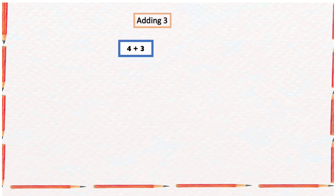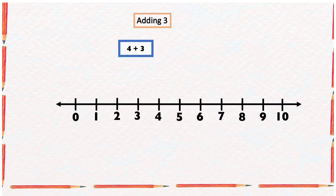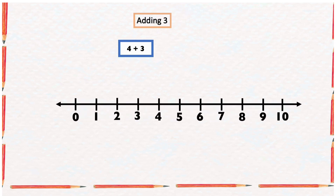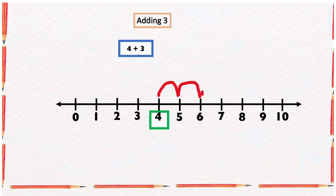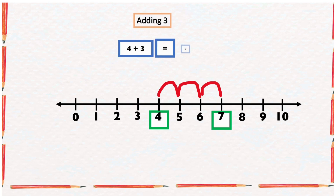Find the sum of four and three with the help of a number line. We start from number four and count three numbers forward: one, two, three. This ended at number seven, so the sum of four and three is equal to seven.